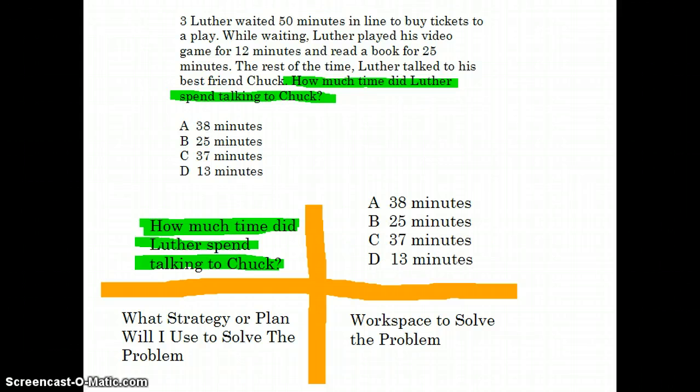What can we eliminate? So our answer choices are 38 minutes, 25 minutes is B, C is 37 minutes, D is 13 minutes.